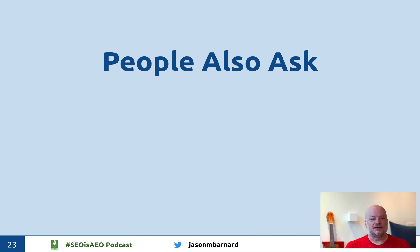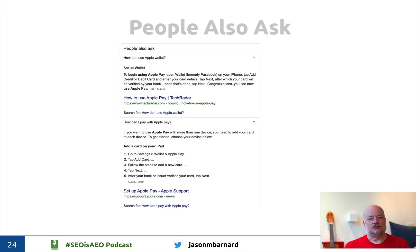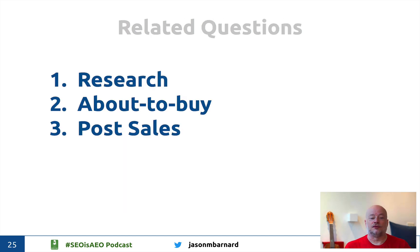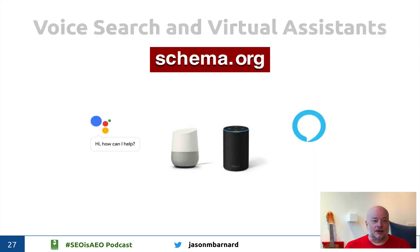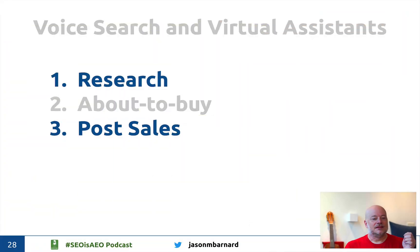People Also Ask gives you some really nice real estate even when people haven't asked the specific question you're answering — also very good for research, about-to-buy, and post-sales. Voice search and virtual assistants: schema markup is going to push actions and skills into the future, so you really want to make sure you've got the schema markup in place — and that is what this technique does. Voice assistants are great for research and post-sales, but not so much for about-to-buy.